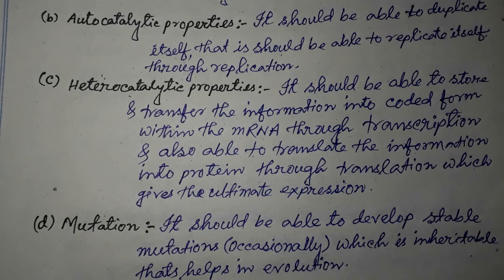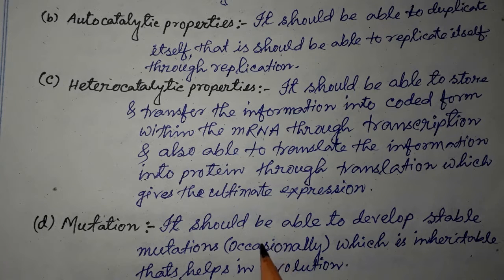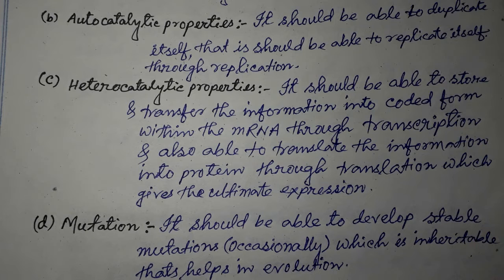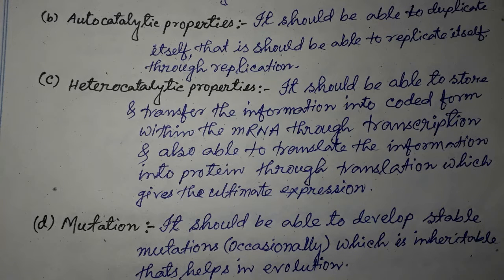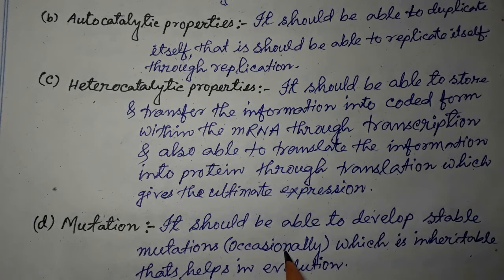The fourth point is mutation. It should be able to develop stable mutations occasionally. Mutation should not happen all the time — it should be only occasionally — and it should be a stable mutation which is inheritable, and that helps in evolution. So genetic material should be able to develop stable mutations occasionally, which are inheritable and thus aid in evolution.